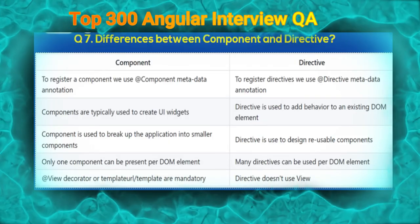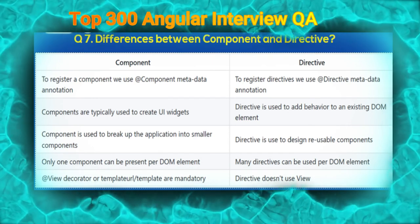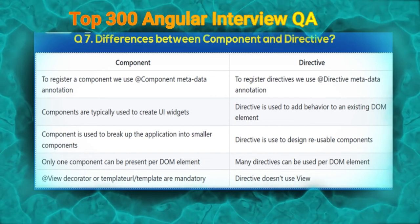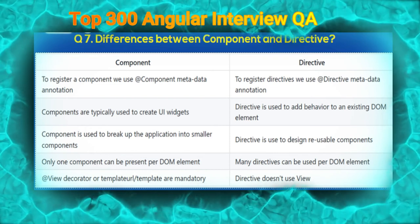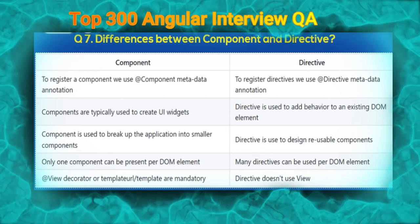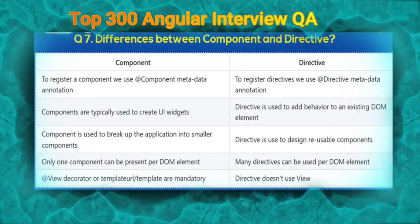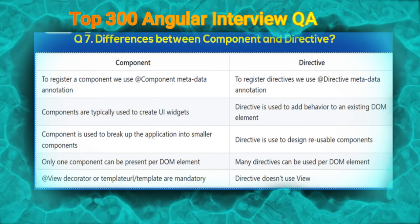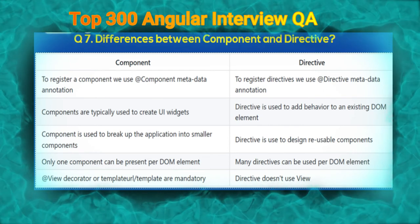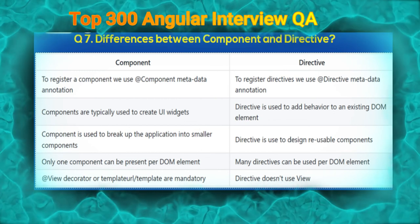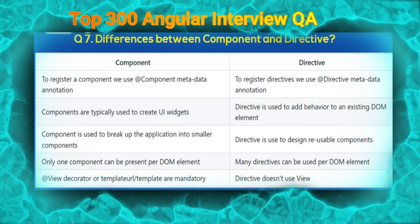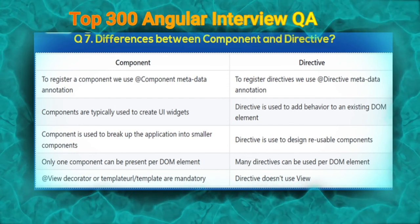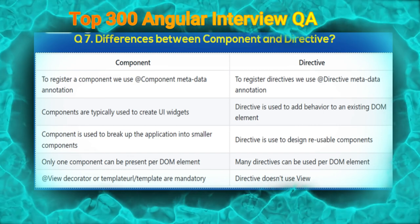The seventh question is: what are the differences between a component and a directive? To register a component we use @Component metadata, and to register a directive we use @Directive metadata. Components are typically used to create a UI widget, while directives are used to add behavior to an existing DOM element. A component is used to break the application into simpler pieces, but a directive is used to design reusable components. Only one component can be present per DOM element, but many directives can be used per DOM element. The view decorators — templateUrl or template — are mandatory for components, but directives do not use a view.